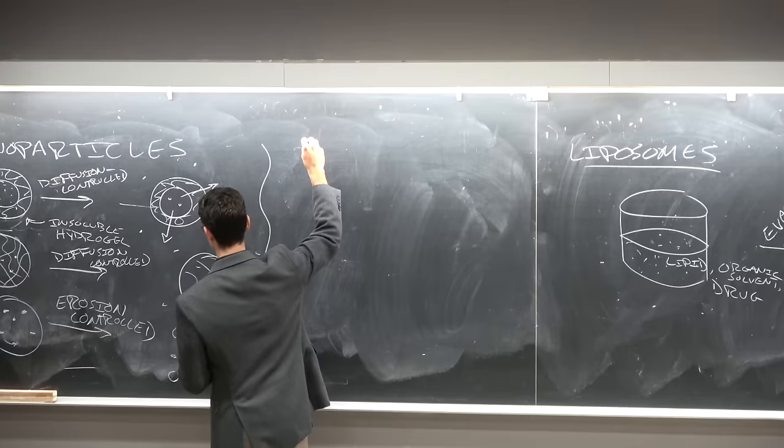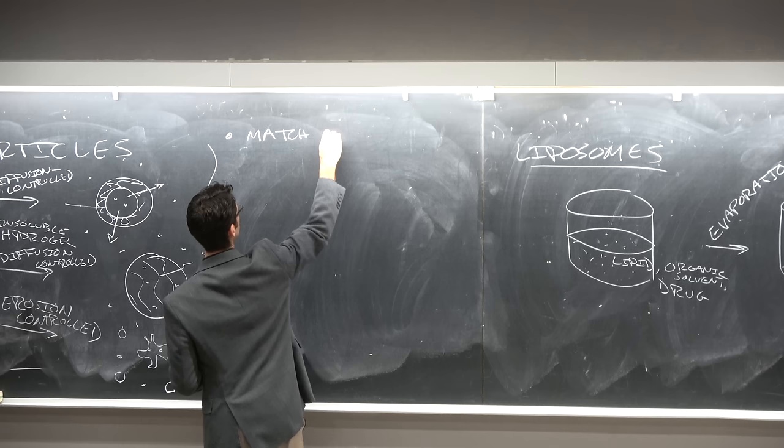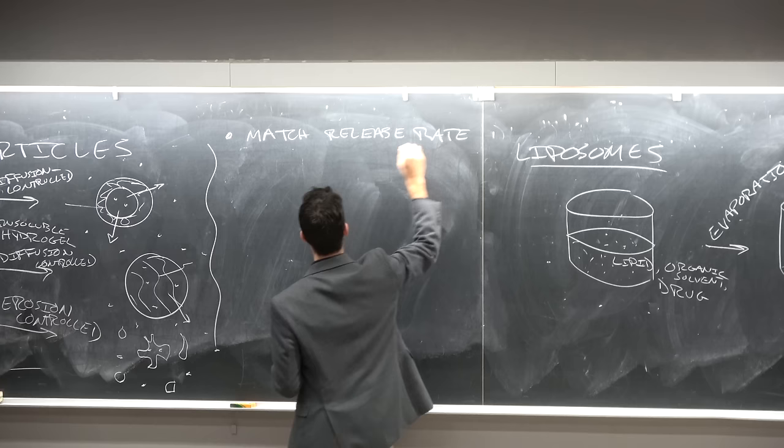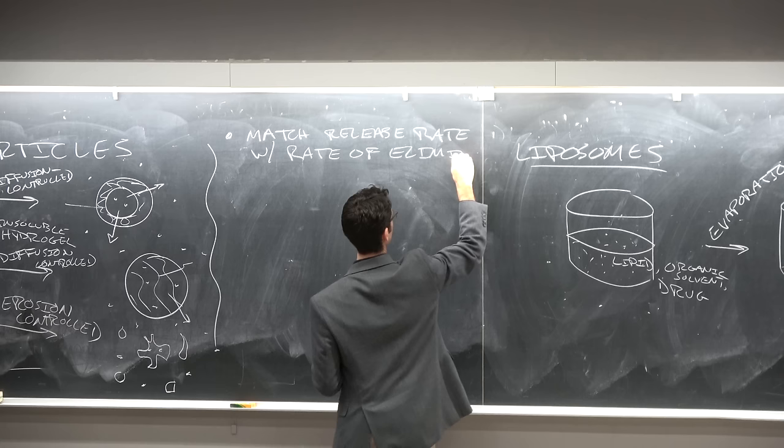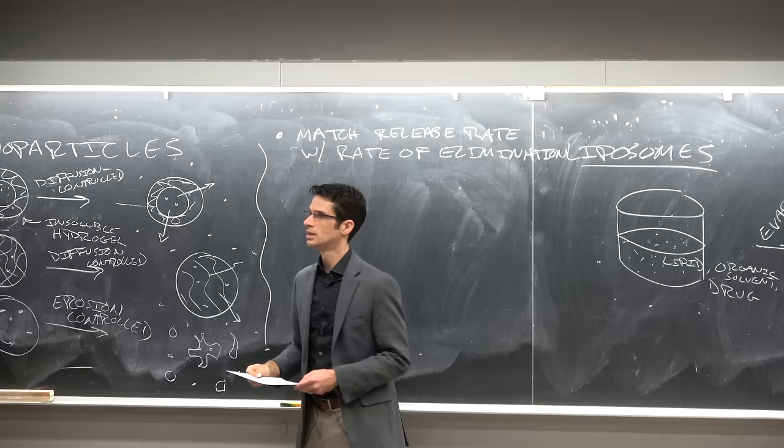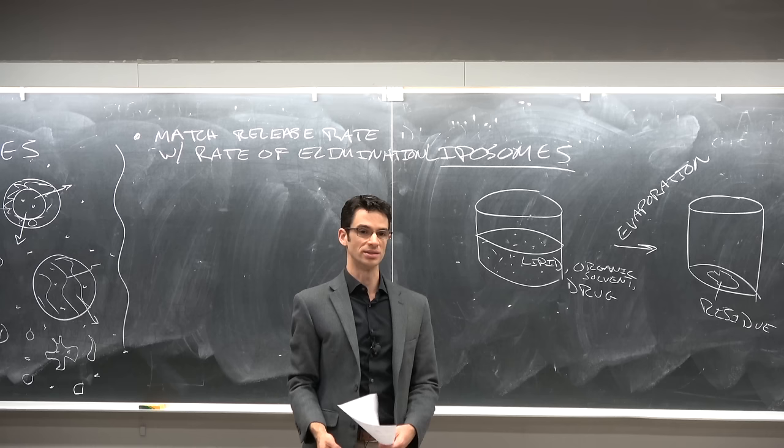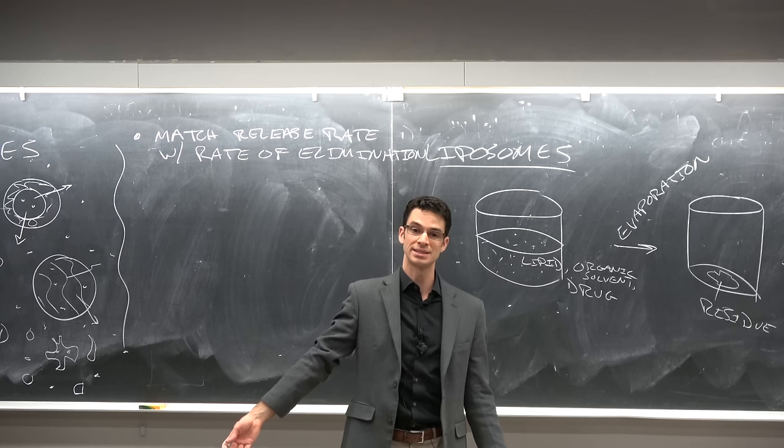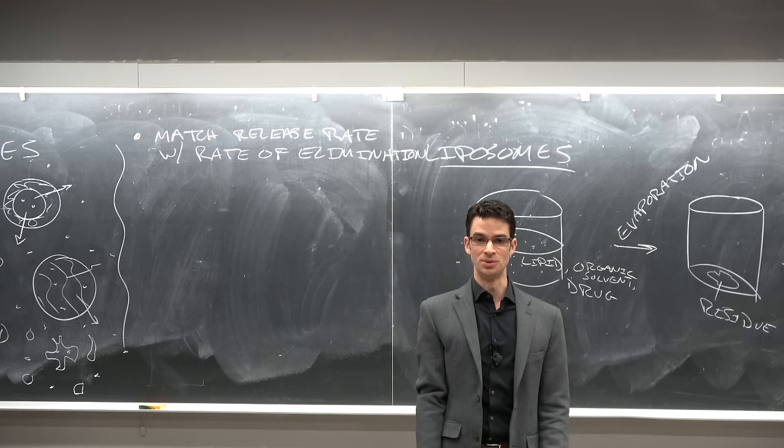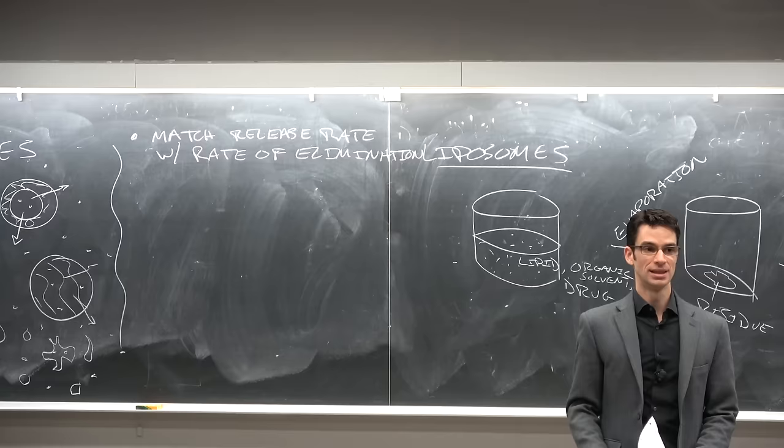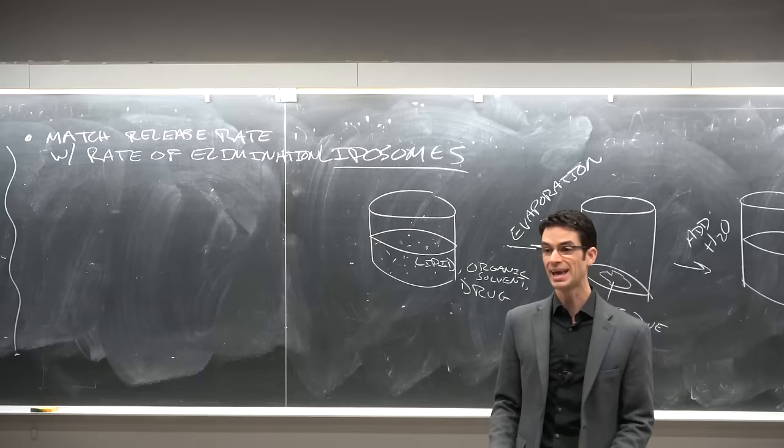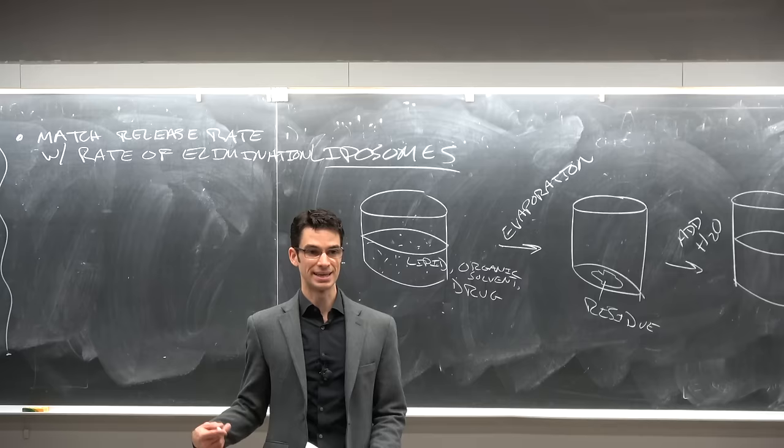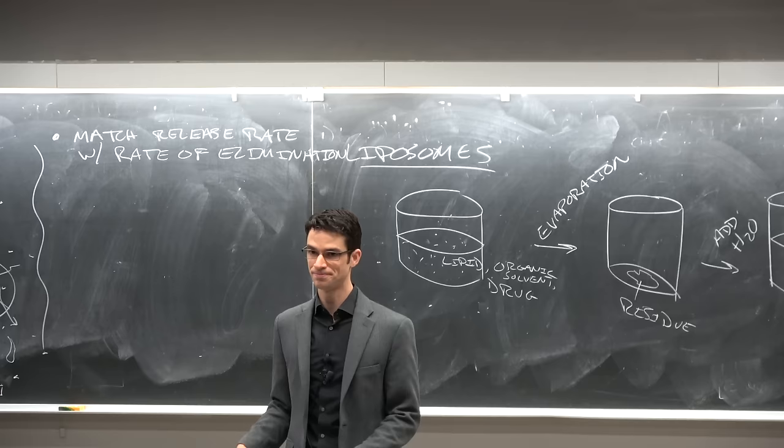So what is the goal? The goal could be to match the release rate with the rate of elimination. How are drug delivery nanoparticles eliminated? Well, in the case of erodible ones, it's no problem because they are dissolved into products that you might find in the bloodstream anyway. For super small nanoparticles, like particles that are less than about eight nanometers, they are filtered out by the kidneys and are excreted through the urine.